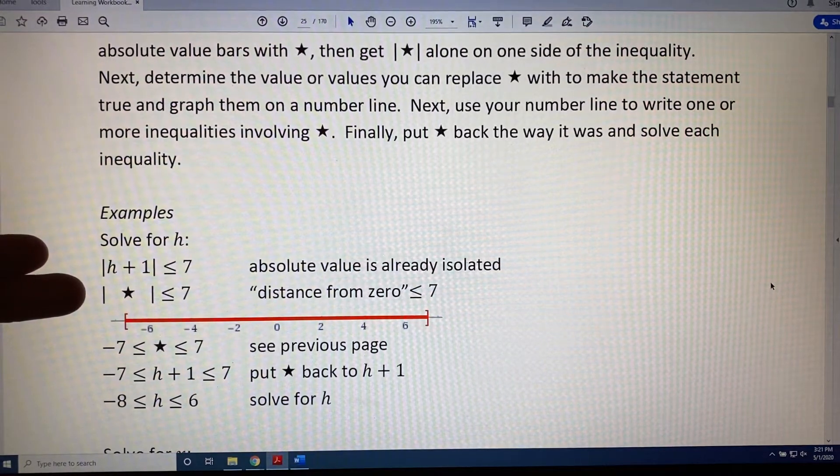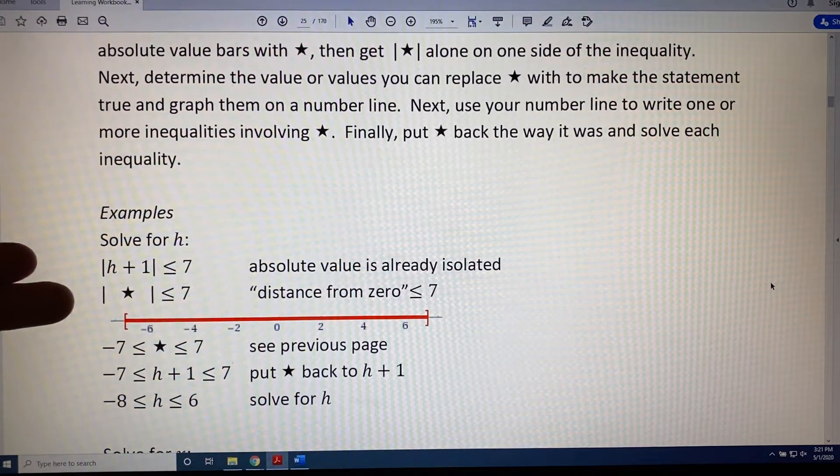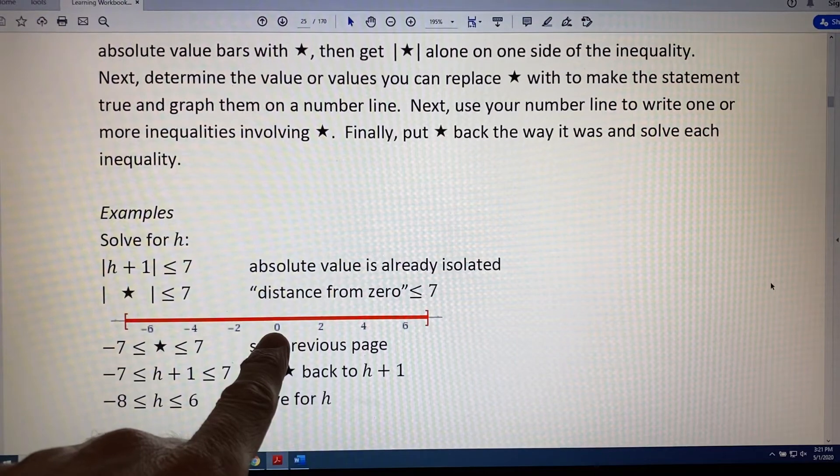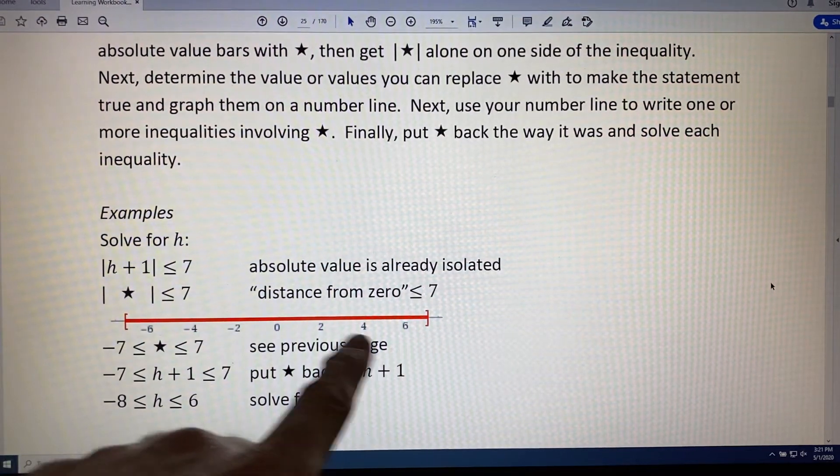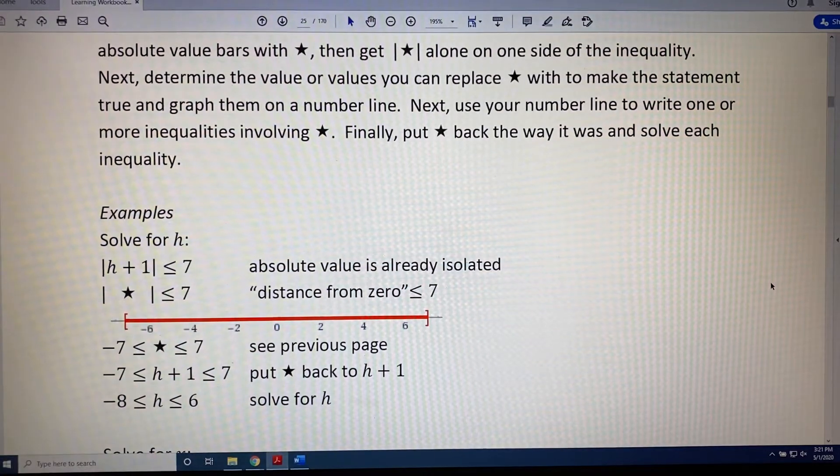Think of this like the statement, distance from 0 is less than or equal to 7. That's like a dog on a 7-foot leash. So, the shading on the number line would be from negative 7 to 7 with brackets at either end because the inequality symbol says less than or equal to.